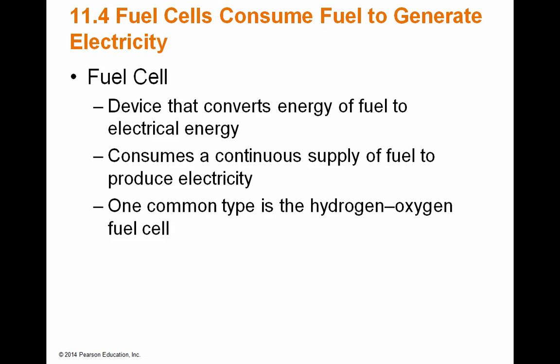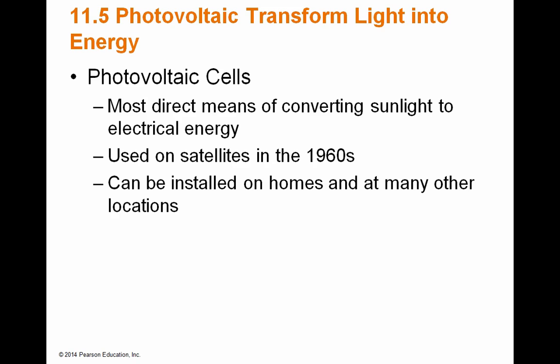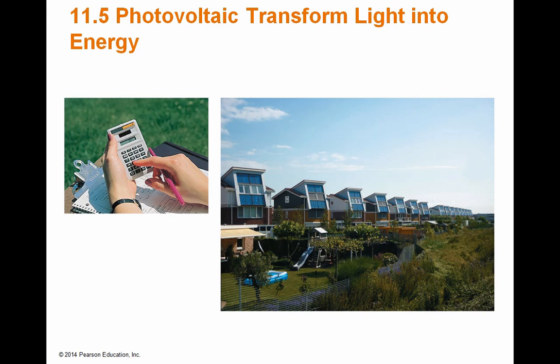Photovoltaic cells are similar but opposite — instead of a fuel you're converting sunlight into electrical energy. They must have a direct means of converting sunlight to electrical energy. The most common use is solar panels that can be installed in homes and many other locations. The cost of solar panels is going down significantly, so many homes can now generate more energy than they consume. Some people actually get paid every month because the cost of leasing the solar panels is less than what they're paid for the energy they generate.